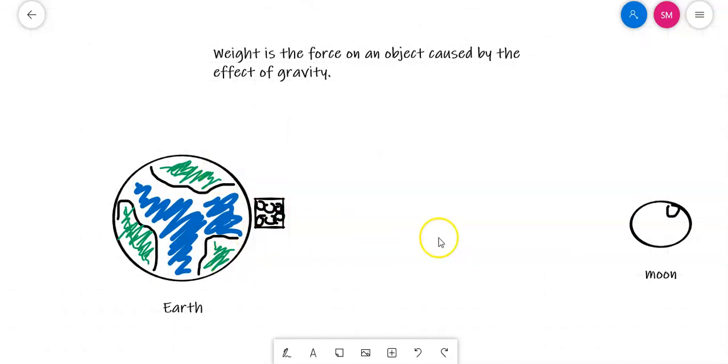With Earth and the Moon, we actually know what gravity is on both of these instances. Gravity is measured as an acceleration. On Earth, the value of gravity is 10 metres per second squared. And on the Moon, it is 1.6 metres per second squared.